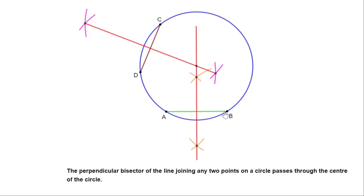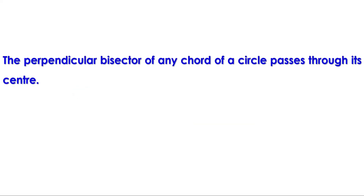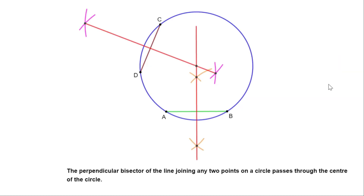The line joining any two points on a circle is called a chord. So AB is a chord and CD is another chord. You can join any two points on the circle to get a chord, and there are many chords. Therefore, we can say: the perpendicular bisector of any chord of a circle passes through its center. Now we know how to find the center of a circle exactly.